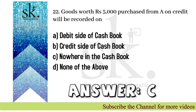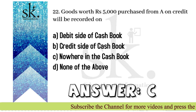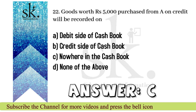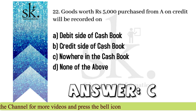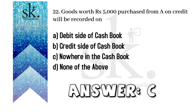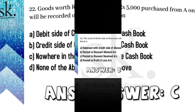Next question: goods worth rupees 5,000 purchased from a vendor on credit — where will this be recorded? Since the cash book records only cash and bank related transactions, there will be no credit transaction in a cash book. Therefore the answer will be C — nowhere in the cash book.